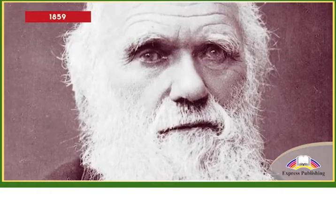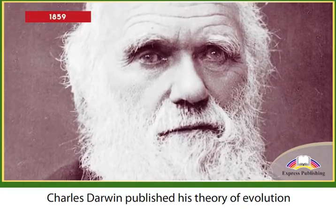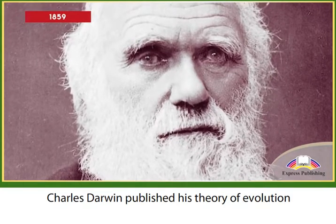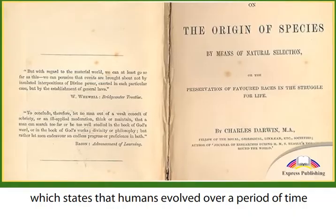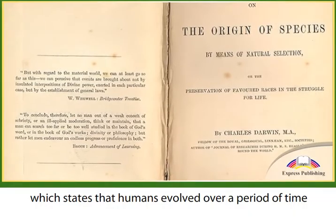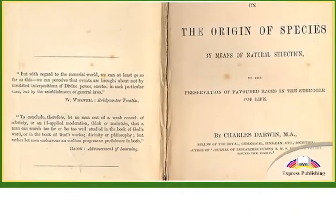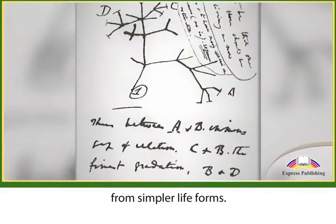1859: Charles Darwin published his theory of evolution, which states that humans evolved over a period of time from simpler life forms.